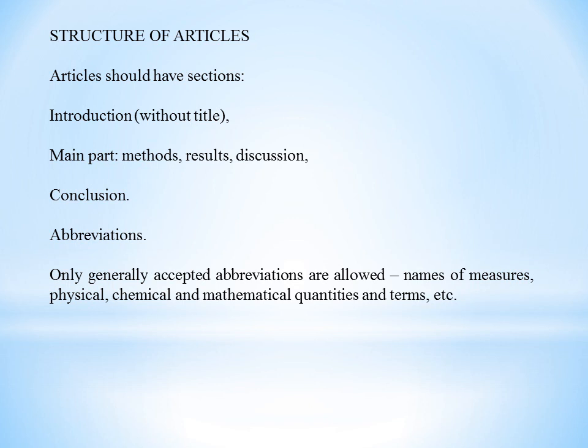Articles should have the following sections: introduction (without title), main part, methods, results, discussion, and conclusion. Subheadings are typed centered. Latin names of plants and animals given in the text are italicized. Tables and figures are numbered in the order they are mentioned in the text, and each table and figure should have its own title.